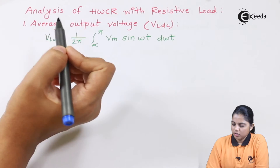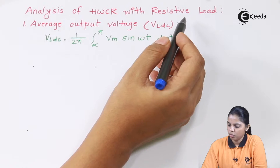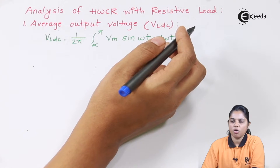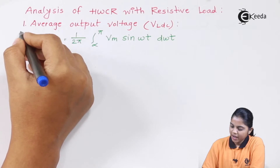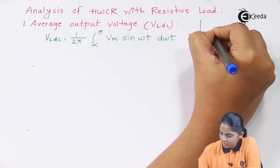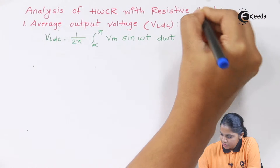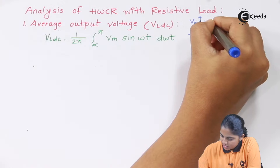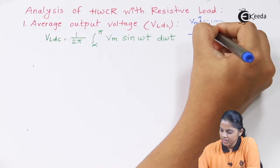So let's do the analysis of the half wave controlled rectifier using resistive load. I am assuming that you all know how the circuit of the half wave controlled rectifier with resistive load looks like. Now I know what the output voltage is for the positive half cycle. So this is a positive half cycle, I am considering this as Vm, and it will start at the point alpha. Alpha is the firing angle.